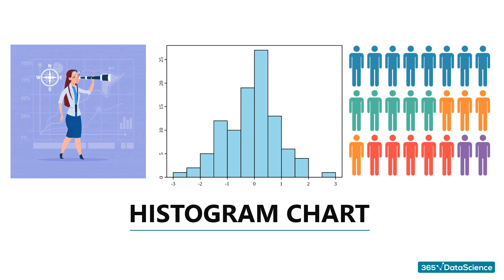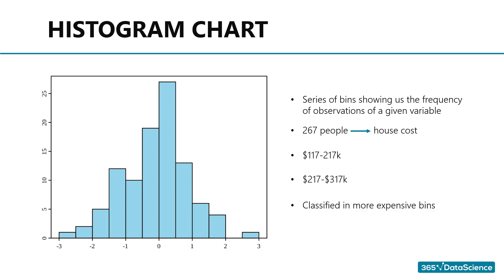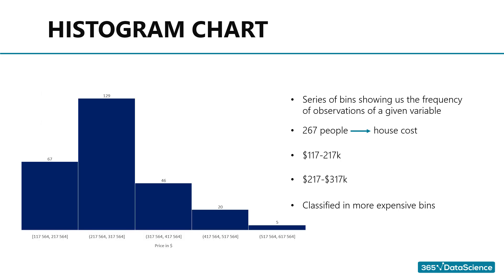The last type of chart we will consider here is the histogram chart — a series of bins showing us the frequency of observations of a given variable. Here's an example: an interviewer asked 267 people how much their house cost. Then a histogram was used to portray the findings. Some prices were in the range of $117,000 to $217,000, many more in the range of $217,000 to $317,000, and the rest of the houses were classified in more expensive bins. Here's what the histogram looks like.